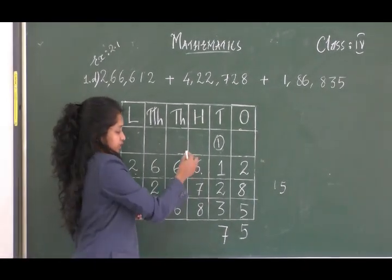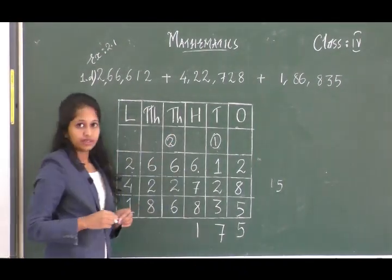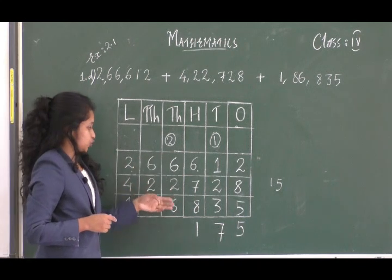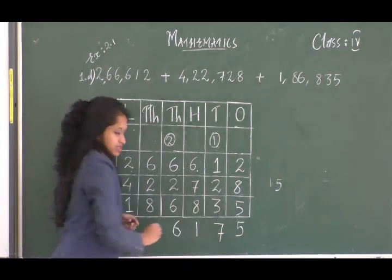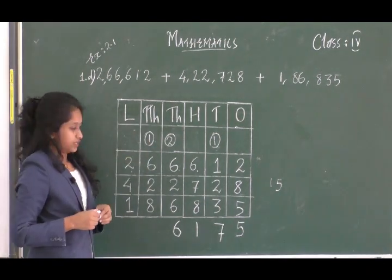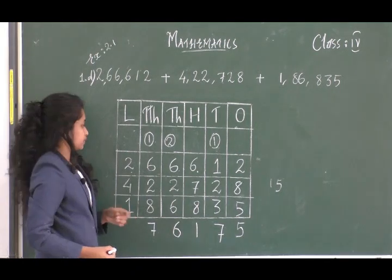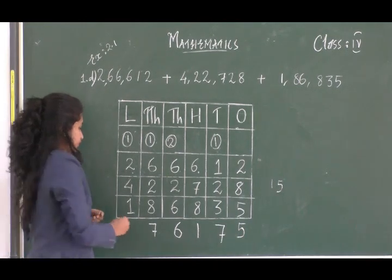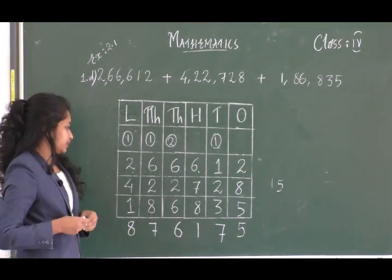You will get 21 in the hundreds place. Write 1 here and 2 is the carry for the thousands place. Now add all the thousands place digits — 6 plus 2 plus 6 plus 2 — you get 16. Write 6 here and 1 goes to carry. In the ten thousands place you get 17, so 7 comes here and 1 goes to carry. Adding the lakhs place gives 8. So the answer is eight lakh seventy-six thousand one hundred seventy-five.